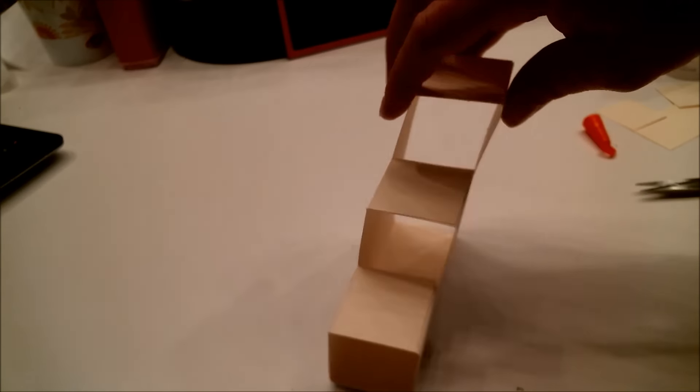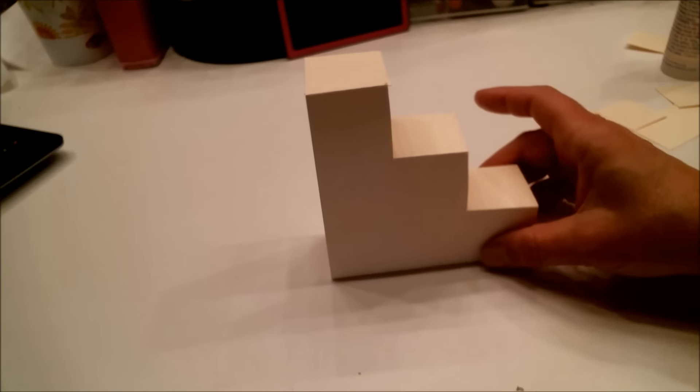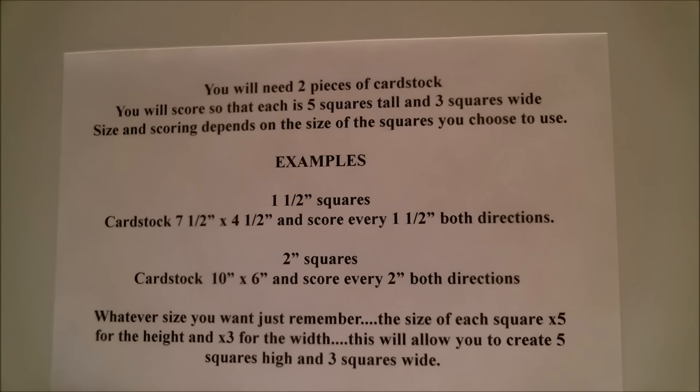Before I talk to you about decorating your card, I'm going to talk to you about making different sizes. You will always need two pieces of cardstock. You will always score it so that there are five squares tall and three squares wide. And of course the size and scoring depends on the size of the squares you choose.